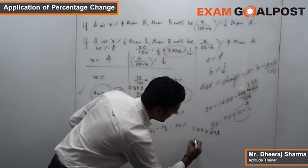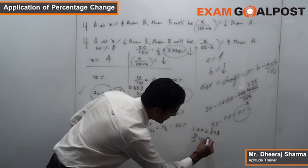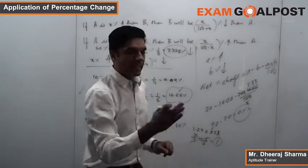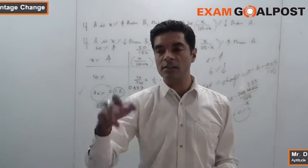1.2 in terms of fraction can be written as 6/5, and this can be written as 5/6. So this cancel and you get 1. So at the end of it, if 1 remains 1, that means the change is 0 percent.